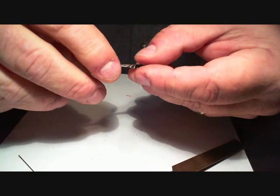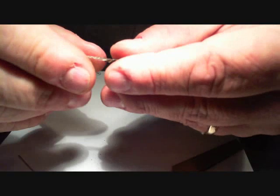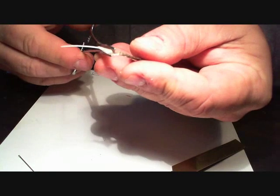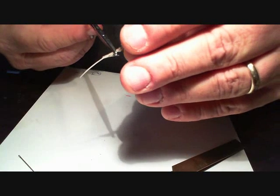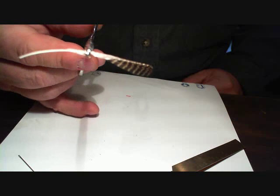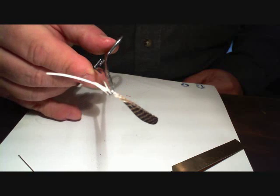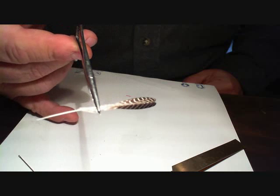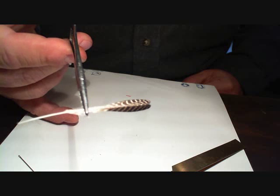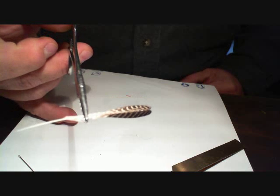It makes for a very nice wing that creates a pretty realistic tent wing for a caddis pattern. The next part of this explanation will be following the various steps of tying this onto the hook shank, dubbing the body, creating antenna, and hackling.